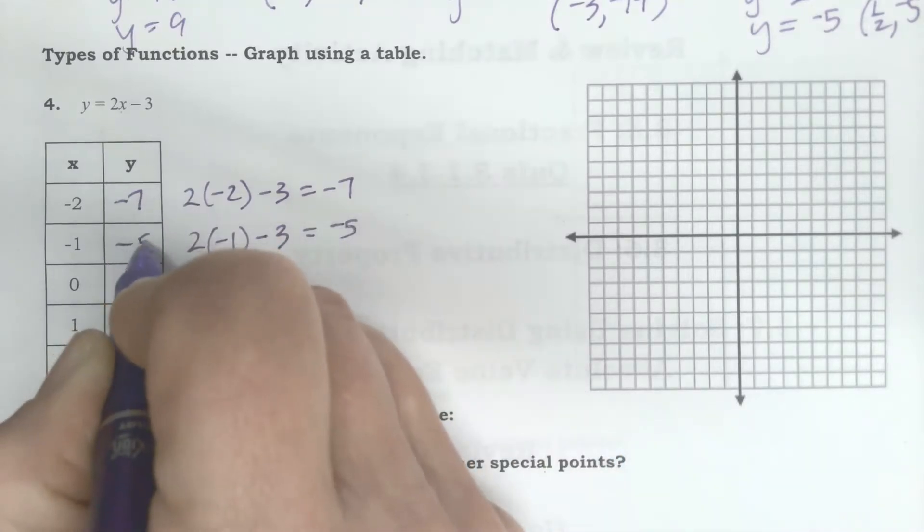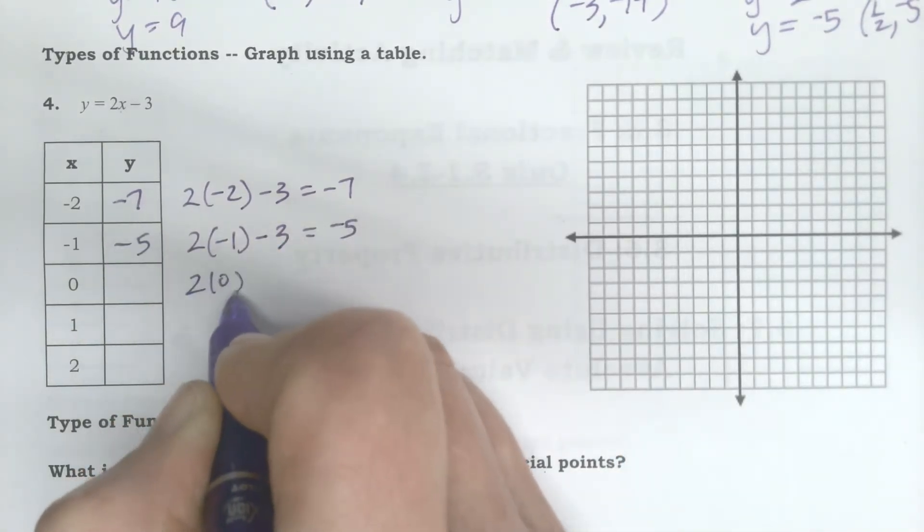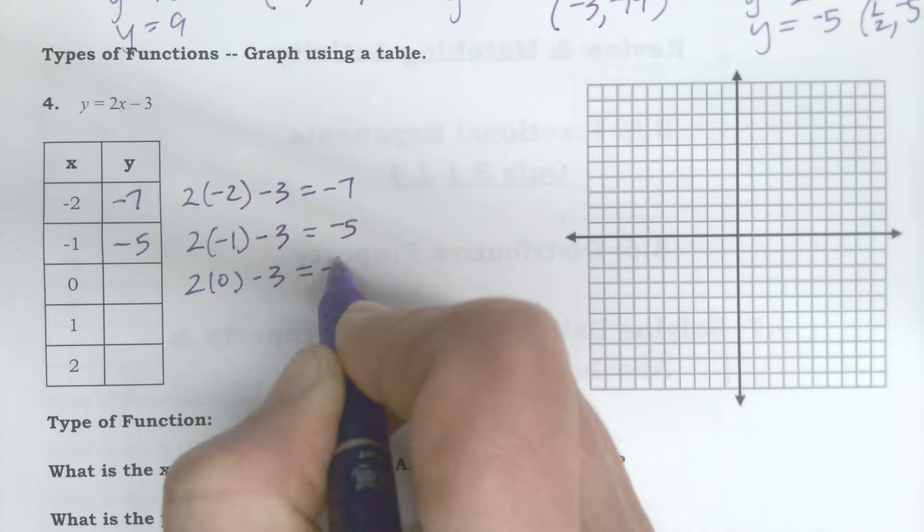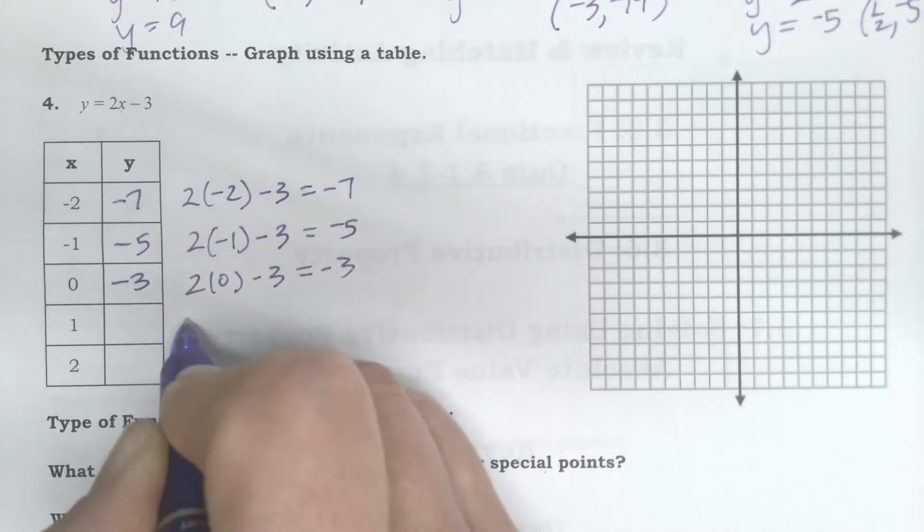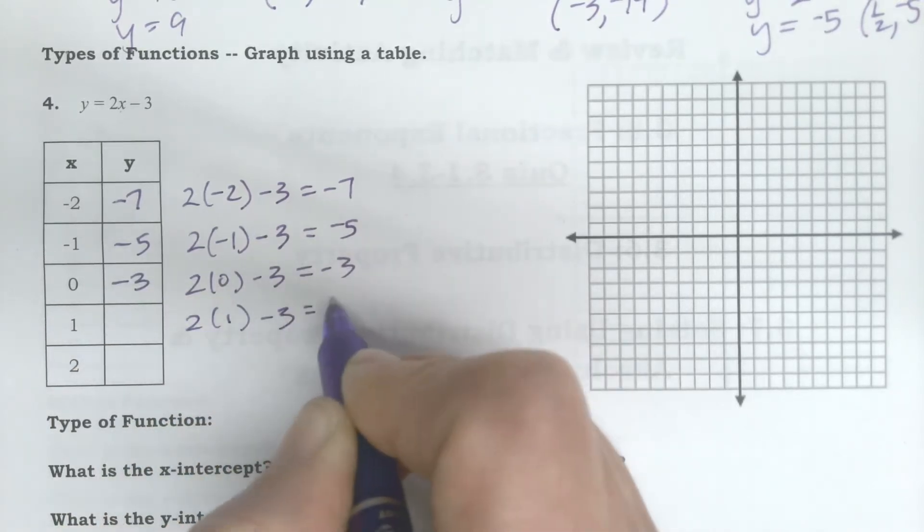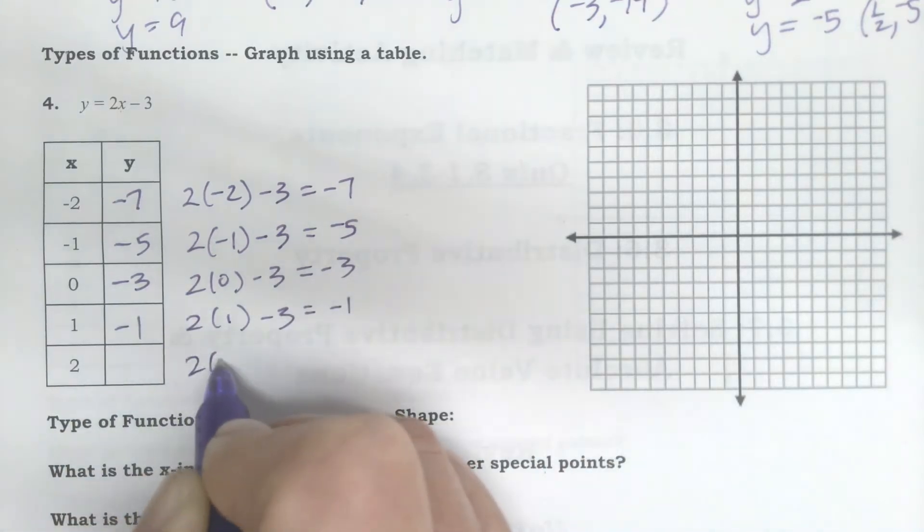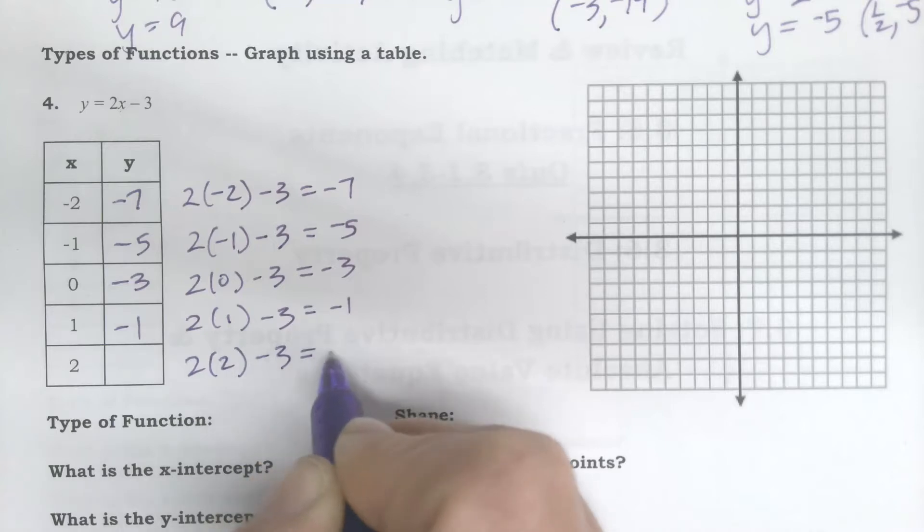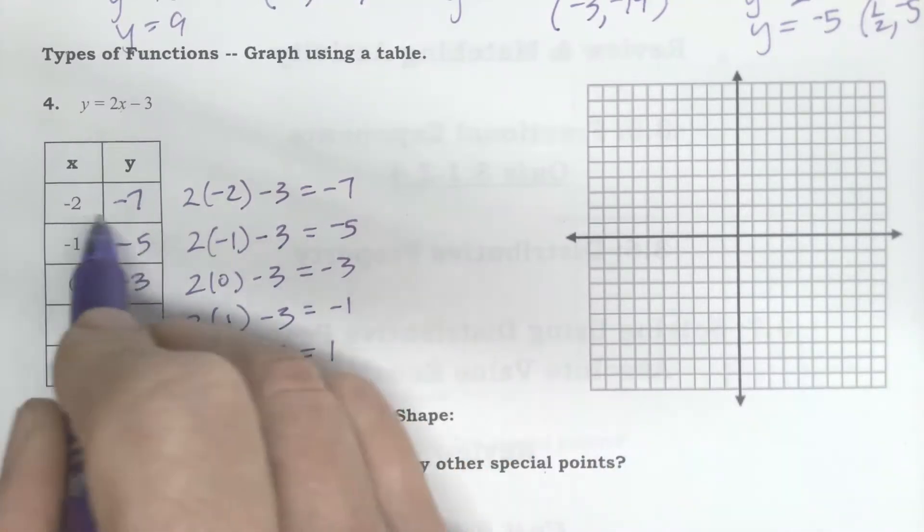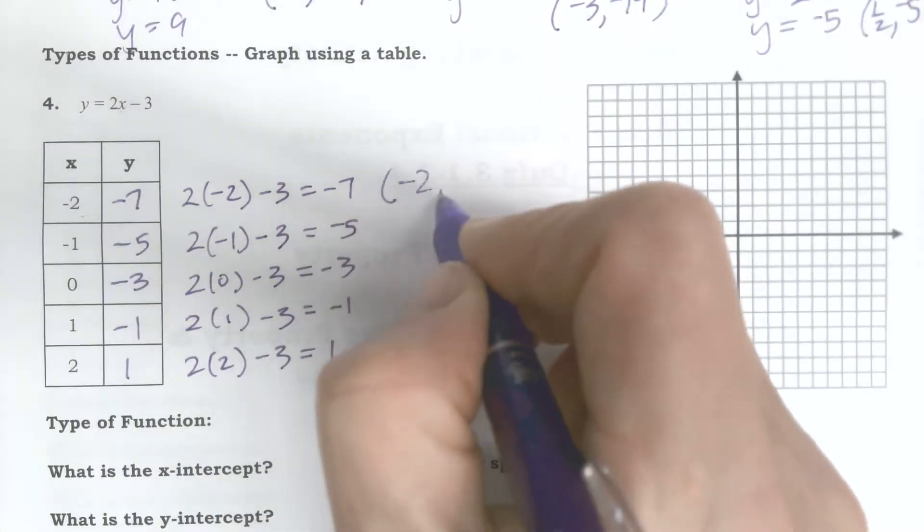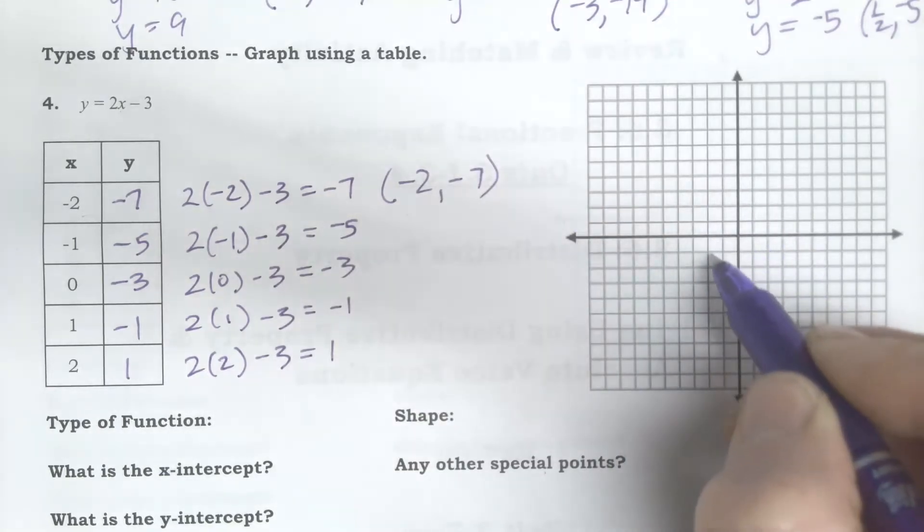Negative 5. 2 times 0 minus 3, negative 3. 2 times 1 minus 3, negative 1. And 2 times 2 minus 3, 1.